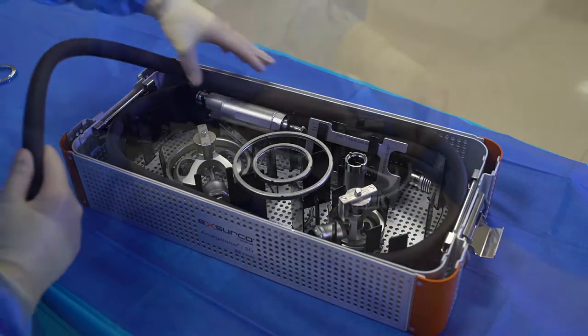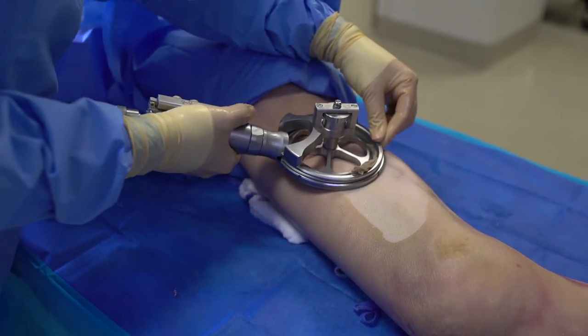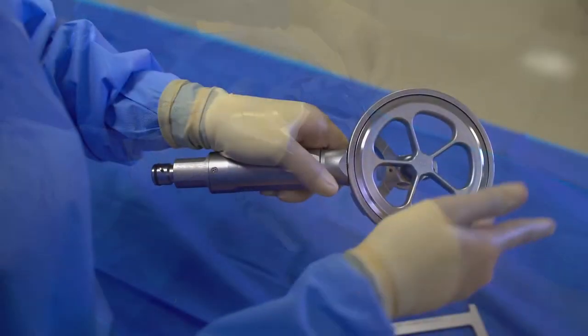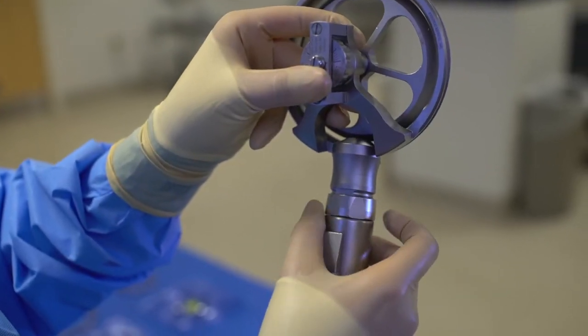As a reminder, if you are just changing out the size of the cutting head during the procedure, please follow the same disassembly instructions. Remove the lock ring, the excision ring, and the cutting head.